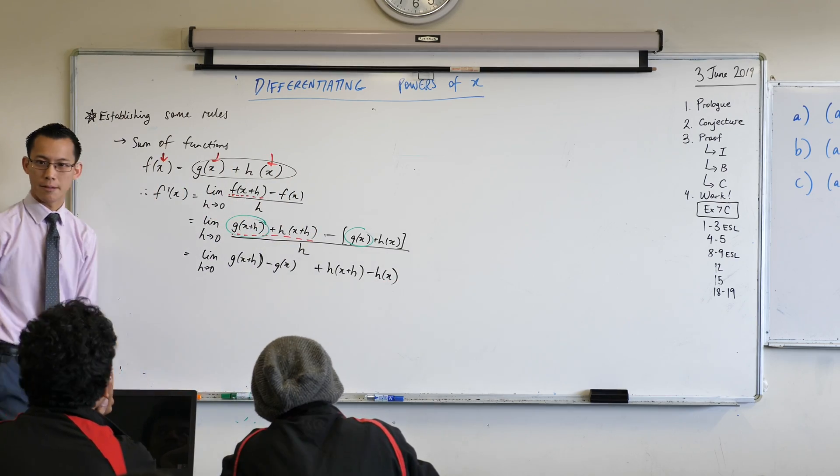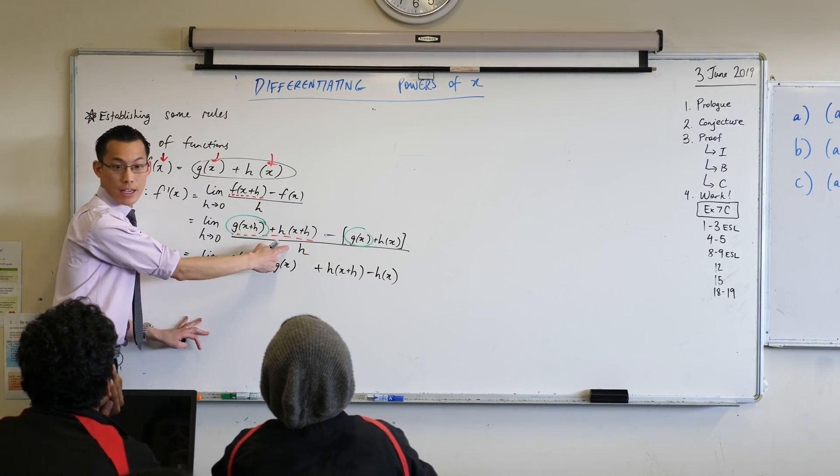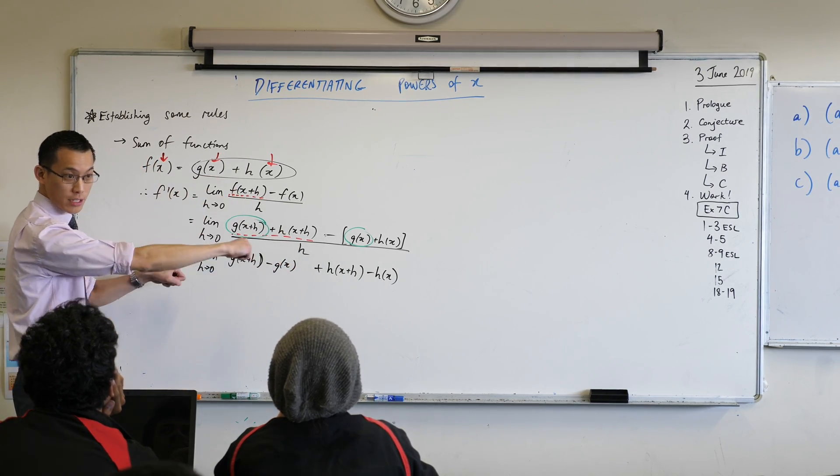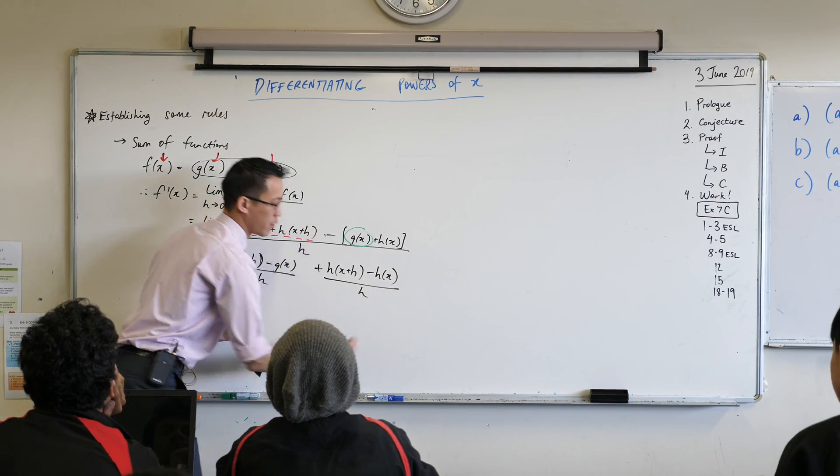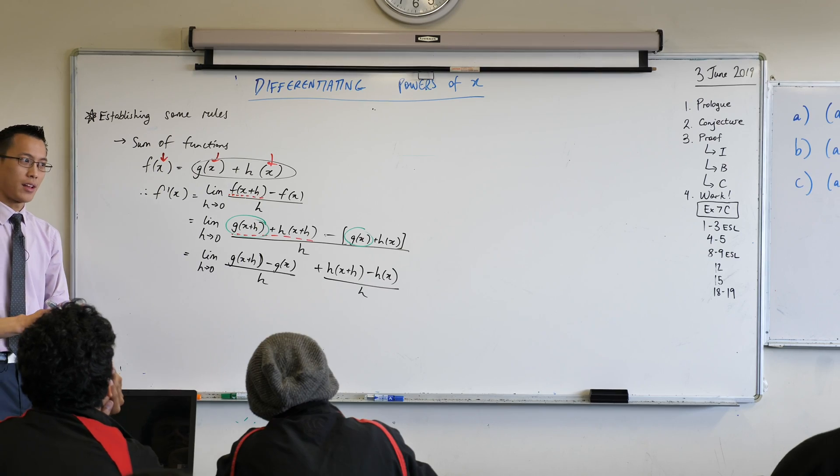That minus applies to everything inside these brackets, so I'm going to say minus h(x) like that. So far so good? Now this entire thing is all over h. Do you agree with that? The entire thing is all over h but what I'm going to do is I'm going to break this apart into two fractions, this over h and this also over h. Is that all right?